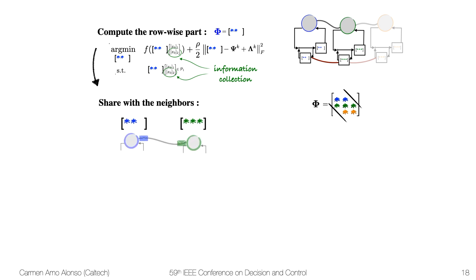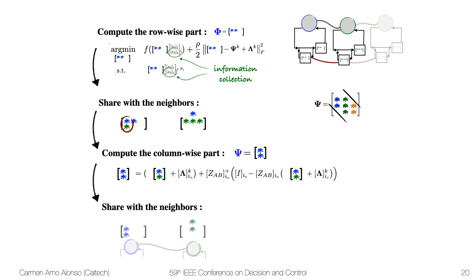Once we have computed the row, we can exchange information with the neighbors to receive the components of the column. We can now compute the column-wise part, and as the blue subsystem, we will need to compute the first column of C. We will use the information that we just received, and the computation in closed form will look like this. Once again, we need to share information with the neighbors, this time to receive information about the rows.